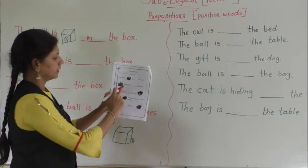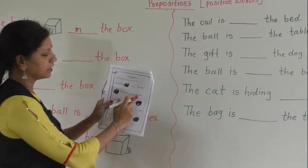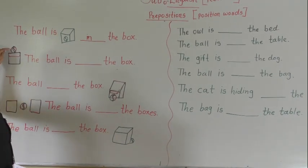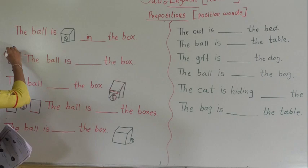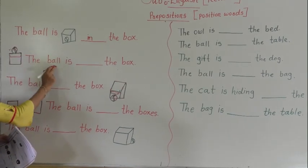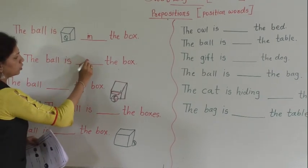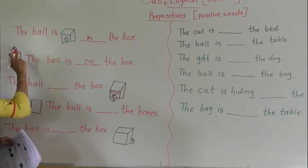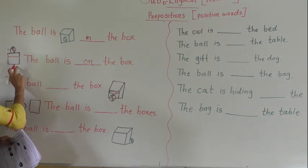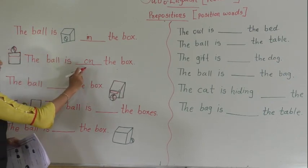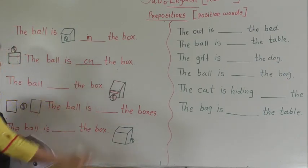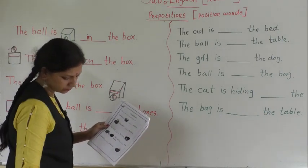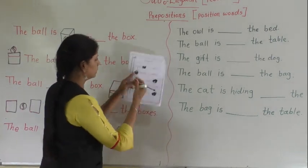Next example. The ball is dash the box. Again you can see the position of ball. Where is the ball? The ball is on the box. See the position of ball — the box is here, and where is the ball? On the box. So the right answer is on the box. Just write down: on the box.